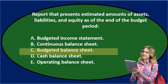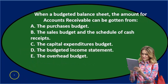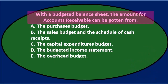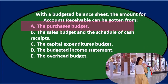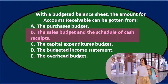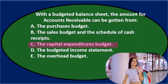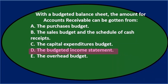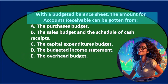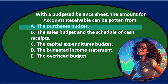With a budgeted balance sheet, the amount for accounts receivable can be gotten from: a) the purchases budget, b) the sales budget and the schedule of cash receipts, c) the capital expenditures budget, d) the budgeted income statement, or e) the overhead budget. Using process of elimination — the purchases budget is about purchasing inventory and would be connected to accounts payable, not accounts receivable, so it would not be A.